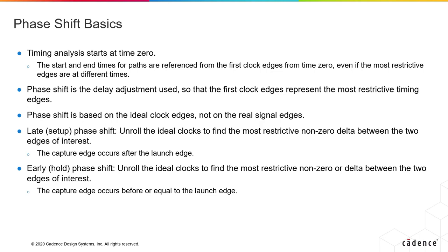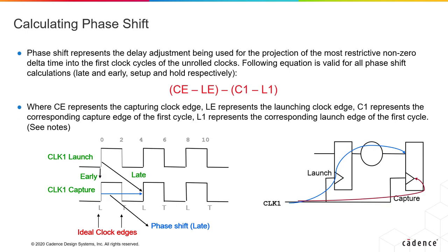For setup, or late phase shift, the capture edge occurs after the launch edge, and so we must unroll the ideal clocks, try to find out what the most restrictive non-zero delta is, then shift it to the first cycle. Whereas with hold, the capture edge happens before or equal to the launch edge, but the same unrolling happens, and we must figure out what the most restrictive non-zero delta is, then shift it to the first cycle. There is a simple equation that works to calculate phase shift for both setup and hold. The way it works is to identify the most restrictive launch and capture edges, then identify the first capture and launch edges from your first cycle. Once you know those four edges, you plug the time units at which they occur into the equation, and this will give you your phase shift value.